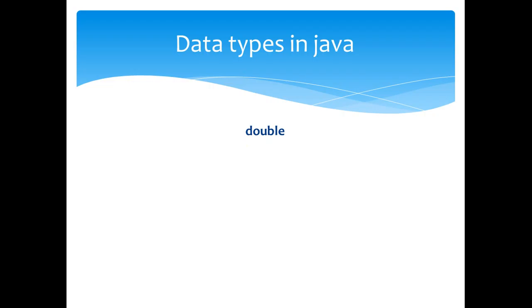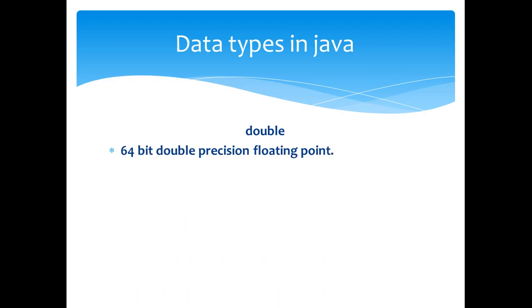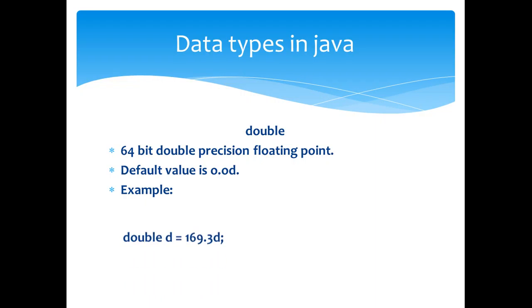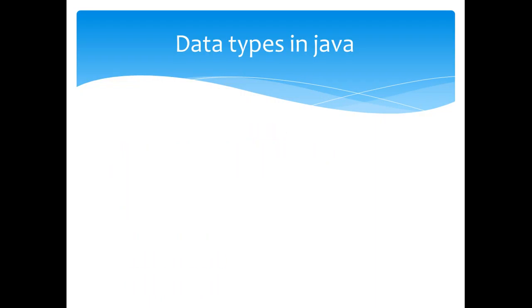The next type is the double. It is a 64-bit double precision floating point value. The default value is 0.0d. An example is shown here.